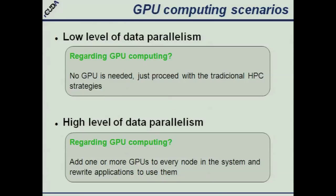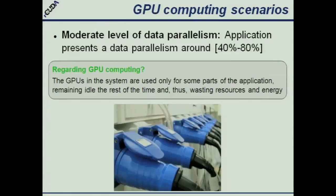For the scenario with very low data parallelism, we don't need a GPU — we could use the CPU as always. For the scenario with a lot of computations that can be brought to the GPU, we just add one or more GPUs to every node and we are done. But what happens with a moderate level of data parallelism — something between 40% and 80%? This means the GPU will be used between 40% and 80% of the time, but outside that percentage the GPU will not be used. The GPU keeps consuming power, keeps wasting power. So for these kinds of programs, the current scenario of having a lot of GPUs in a cluster may end up with a lot of idle GPUs, which is an energy waste.